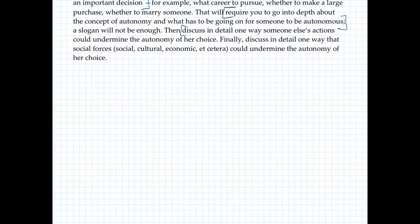Then discuss in detail one way someone else's actions could undermine the autonomy of her choice. And finally, discuss in detail how some social forces could also be impairing the autonomy. I haven't said yet what order to take them in — there are different ways to do it — but those are the tasks.